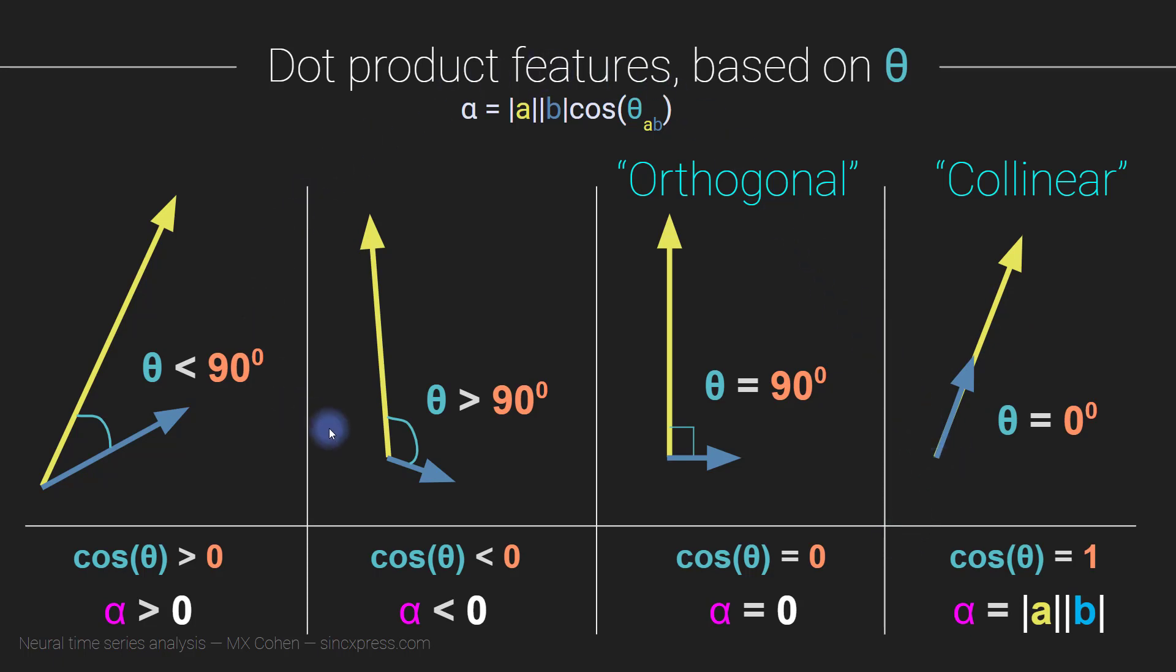So why am I telling you all of this information? Well, first of all, I think it's just kind of interesting to know, interesting to think about. But there is more practical importance of this, particularly when we get to time frequency analyses, and you will see that there is a very important relationship between the sign of the dot product and the result of time frequency analyses, in particular in wavelet convolution.